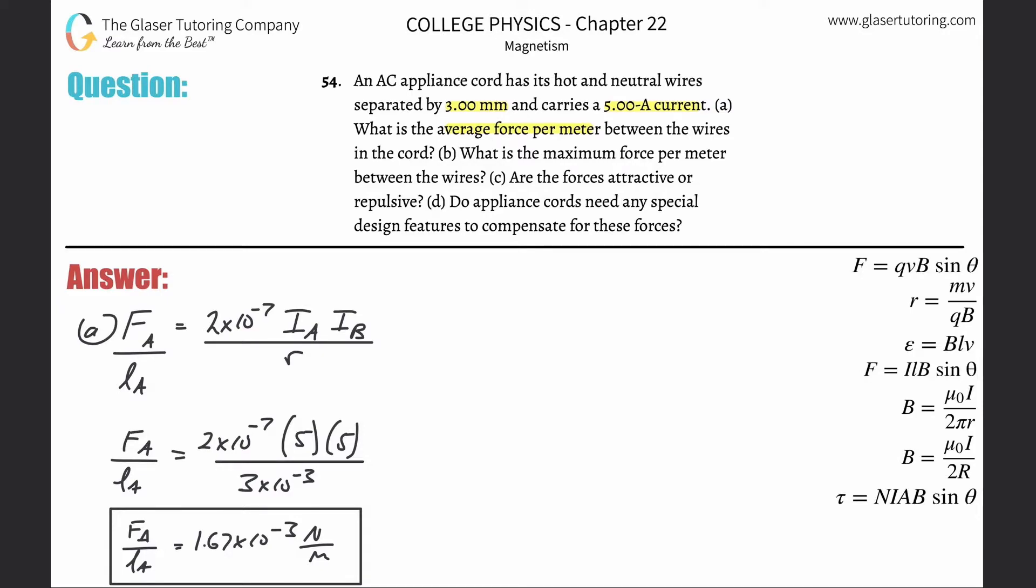So now letter B, it's saying what is the maximum force per meter. So basically we're going to use the same formula here. We're going to use the same formula as this one. Now the only difference is that, let's do this. So the only difference here is now that the current that they gave us, it didn't mention it, but if it's asking for the average force per meter and we calculated it using this current, well what that means is that we made an assumption. It means that we assumed that this current was the average current.